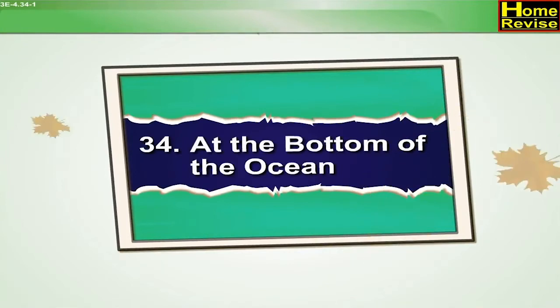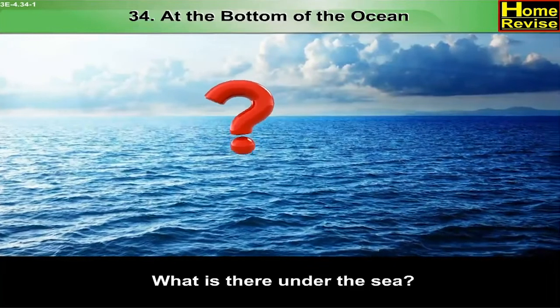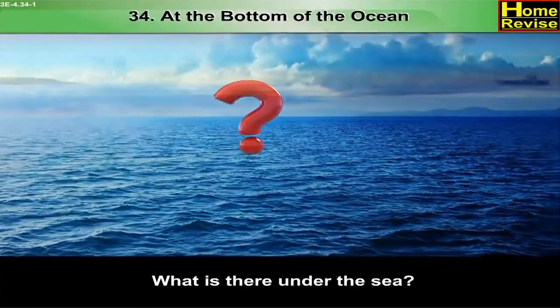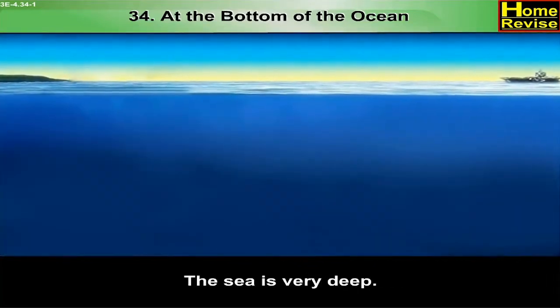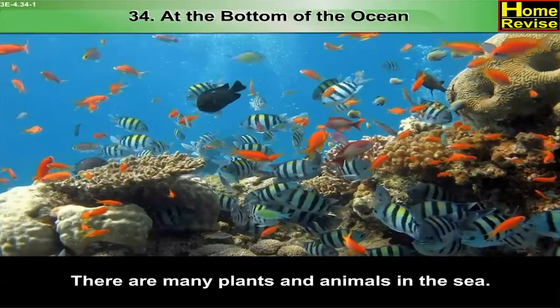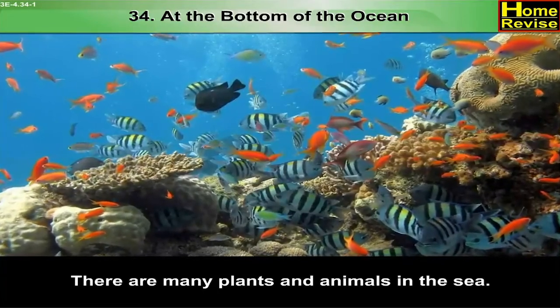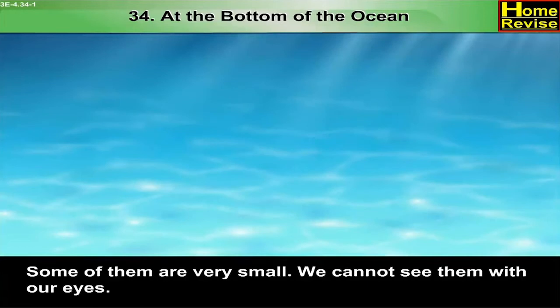Chapter 34: At the bottom of the ocean. What is there under the sea? The sea is very deep. There are many plants and animals in the sea. Some of them are very small. We cannot see them with our eyes.